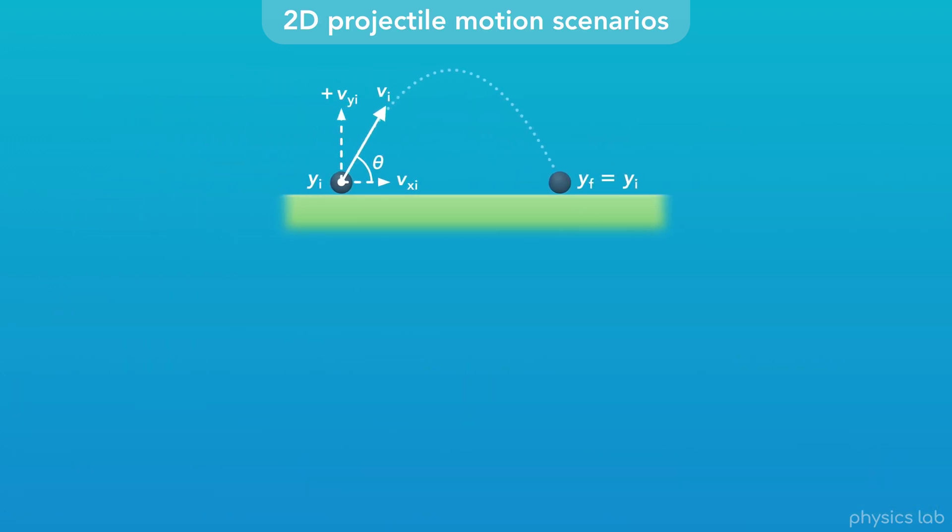This is the second example that we did, where an object starts and ends at the ground. We'll say the origin is on the ground at the initial x position. The x motion graphs are the same for every scenario, so we'll just show them for this example.